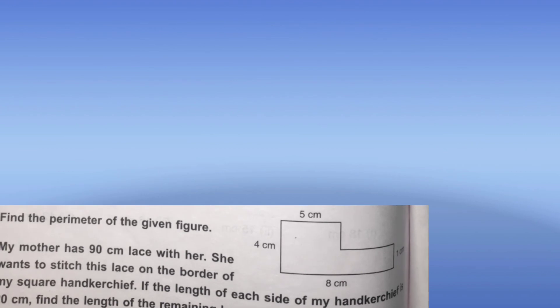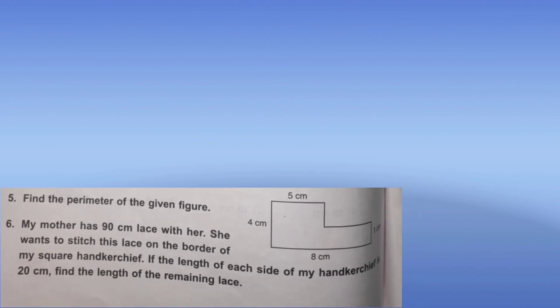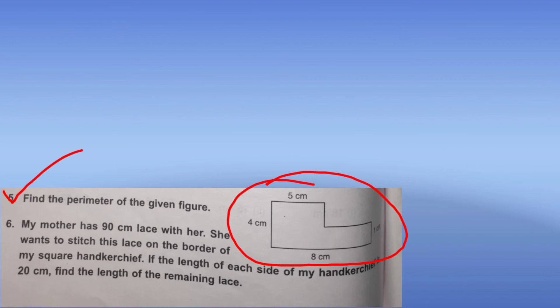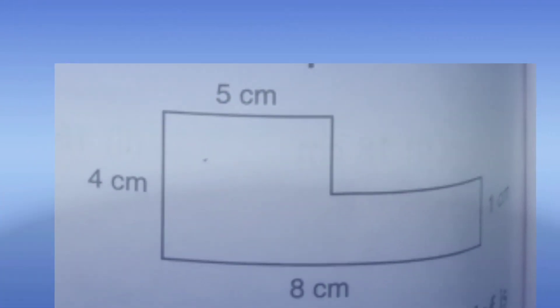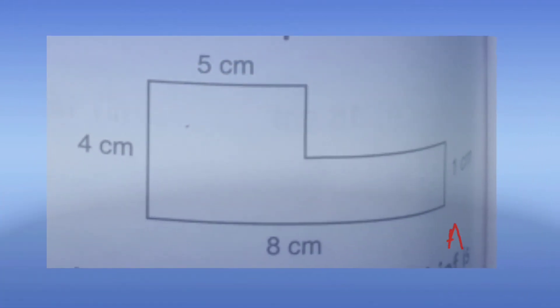Question number 5: find the perimeter of the given figure. We need to label the corners: A, B, C, D, E, F. Now we need the total length of the boundary.